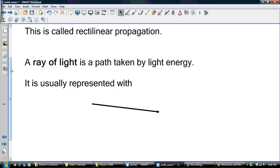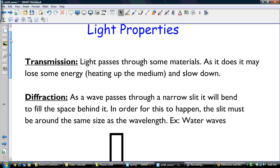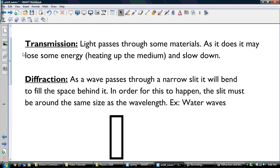We also talked about some properties of light. First one, transmission. Light passes through some materials. As it does, it may slow down, lose some energy, heating up the medium and slowing down. So we talked about how speed of light differs in certain materials and how it's slower in water than it is in air, that kind of thing.